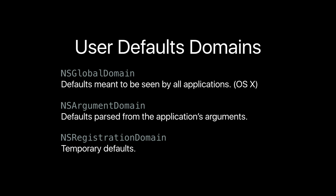Quickly, I'll go over some domains. There's the NSGlobalDomain for user defaults — meant to be seen by all applications; iOS might have some of these but they're read only. The argument domain contains ones passed in as arguments. And the registration domain contains temporary defaults that are basically fallback values — if a value isn't set, fall back to the registration domain. That's very handy if you're storing something in NSUserDefaults and it really shouldn't be nil or your application will blow up — just register a default for the default.